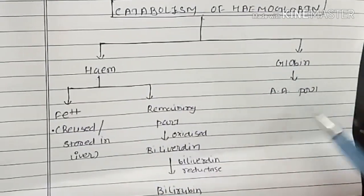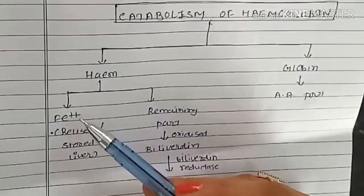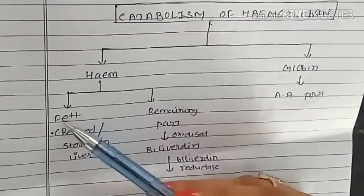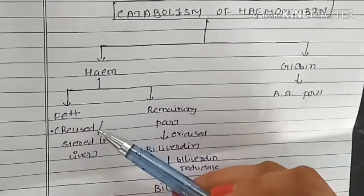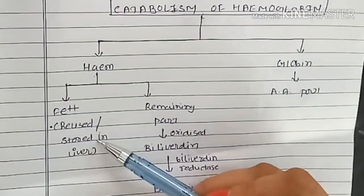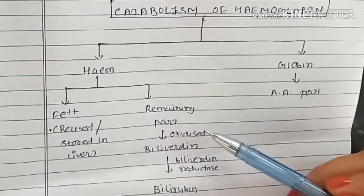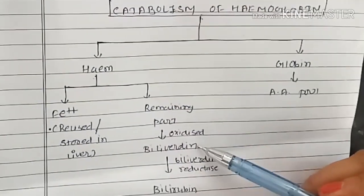Globin goes to amino acid pool. Heme will further catabolize and release Fe2+, which can be reused for hemoglobin synthesis or stored in liver. Remaining part of heme will be oxidized and form biliverdin.